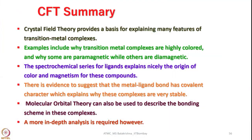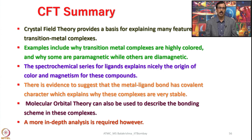So let me summarize now crystal field theory. Crystal field theory provides a basis for explaining many features of transition metal complexes that you saw in my last few lectures and examples include why transition metal complexes are highly colored and why some are paramagnetic while others are diamagnetic. So that information about magnetism also comes. The spectrochemical series for ligands explains nicely the origin of color and magnetism for these compounds and there is evidence to suggest that the metal ligand bond has covalent character which explains why these complexes are very stable and of course that I did not really mention about that nephelauxetic effect we say and that is coming under ligand field theory.